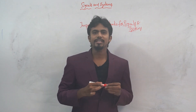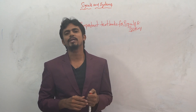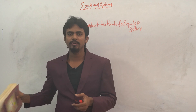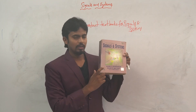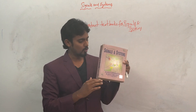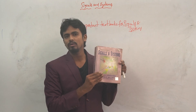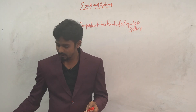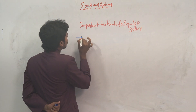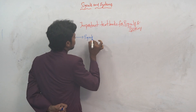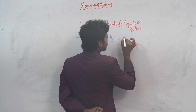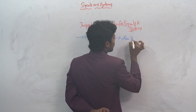The first important textbook for Signals and Systems from a competitive examination point of view is Signals and Systems by Alan V. Oppenheim. I generally follow this textbook and most of what I teach in these video lectures is based on this textbook only.